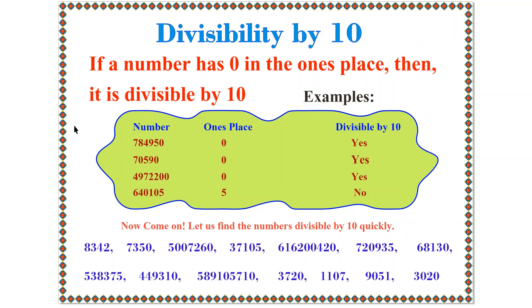Let us do some examples. The number 784950 has 0 in its 1s place, so it is divisible by 10. The next number, 70590, also has 0 in its 1s place, so it is divisible by 10. The next number, 4972200, also has 0 in its 1s place, so it is also divisible by 10.